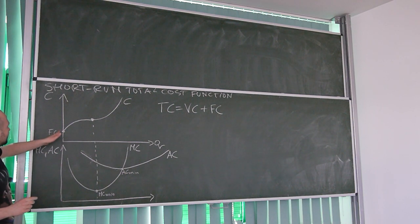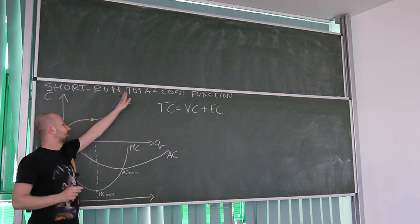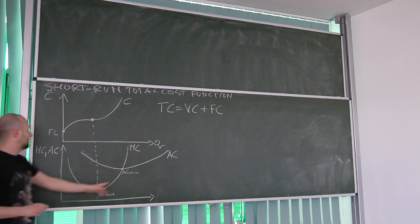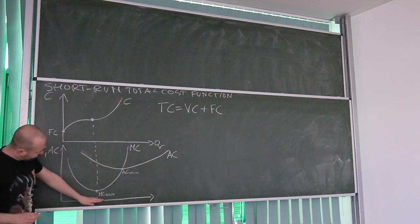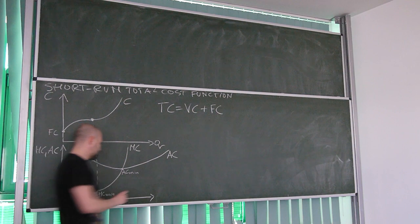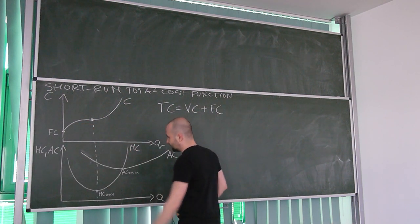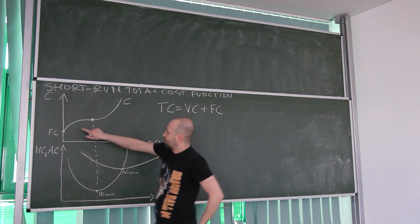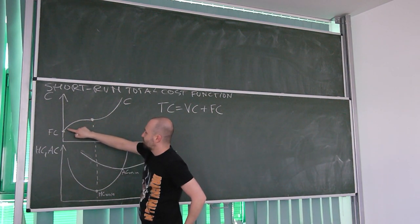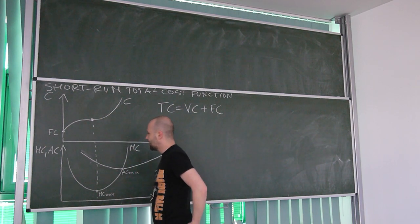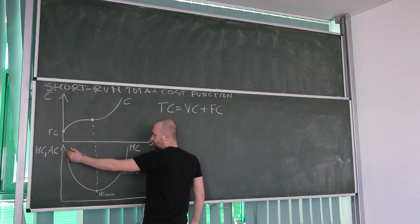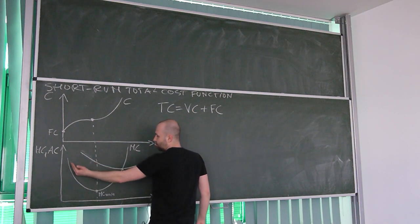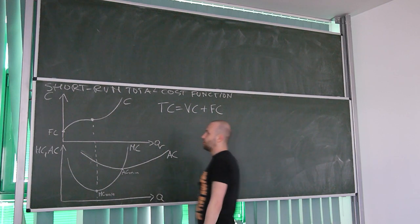We see that the bigger the level of production, the bigger the cost, which means that marginal cost must be positive — marginal cost is always above zero. But if the function is increasing less than proportionally, it means it's concave, so the first derivative of this function has a negative slope, as you can see over here.